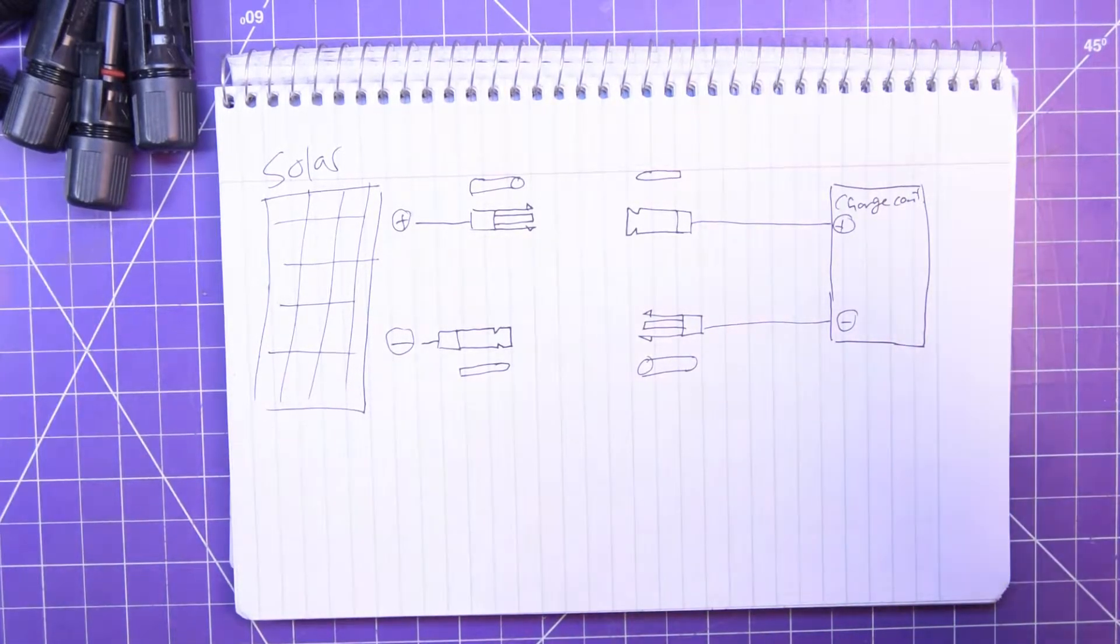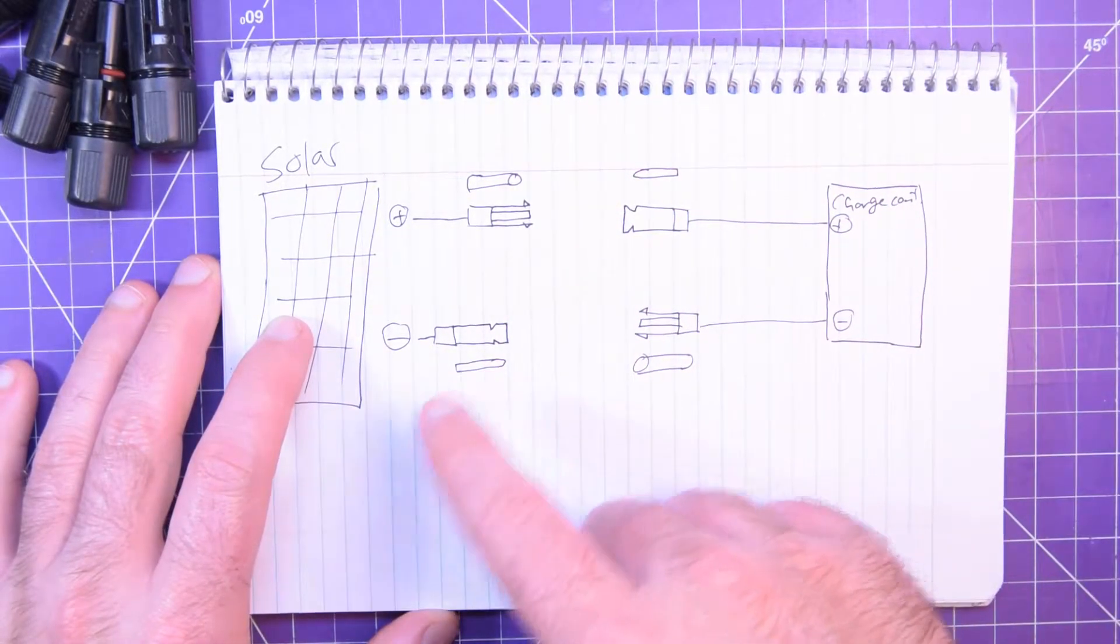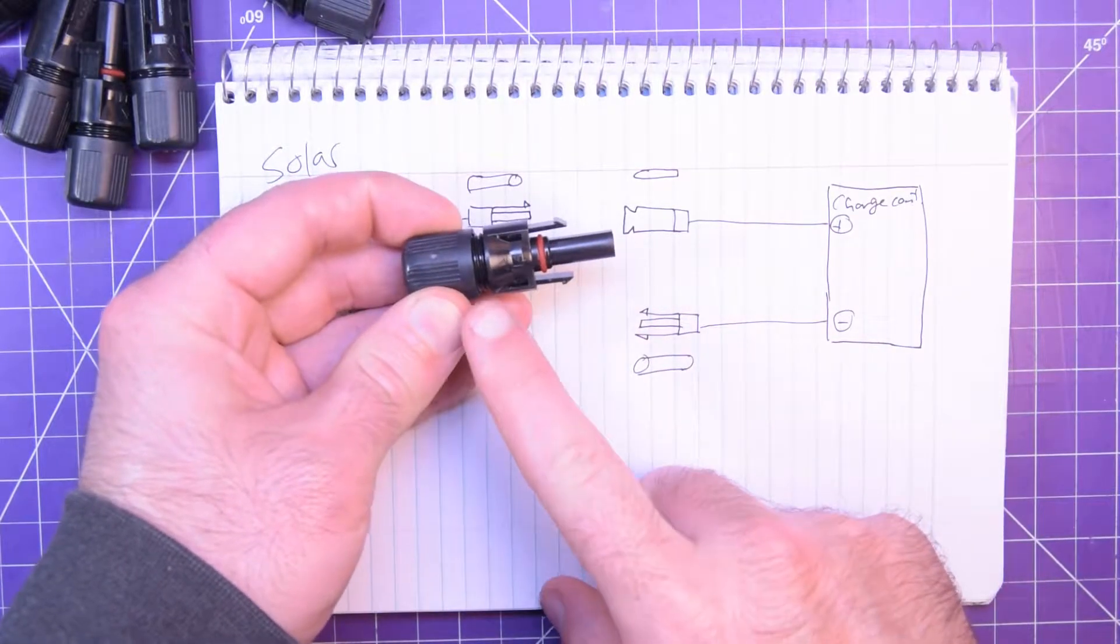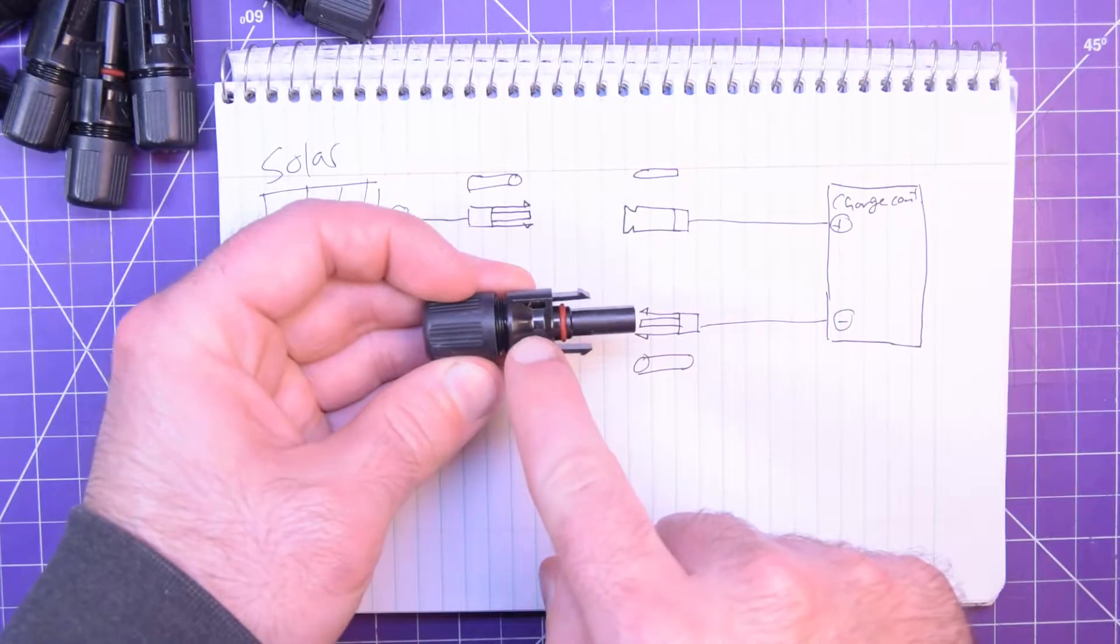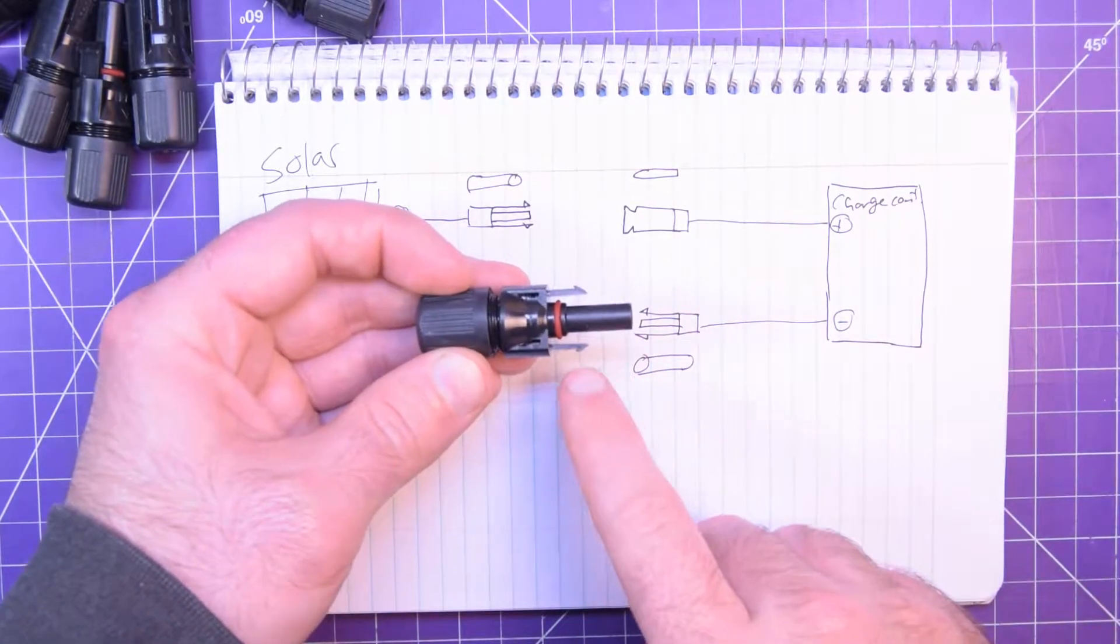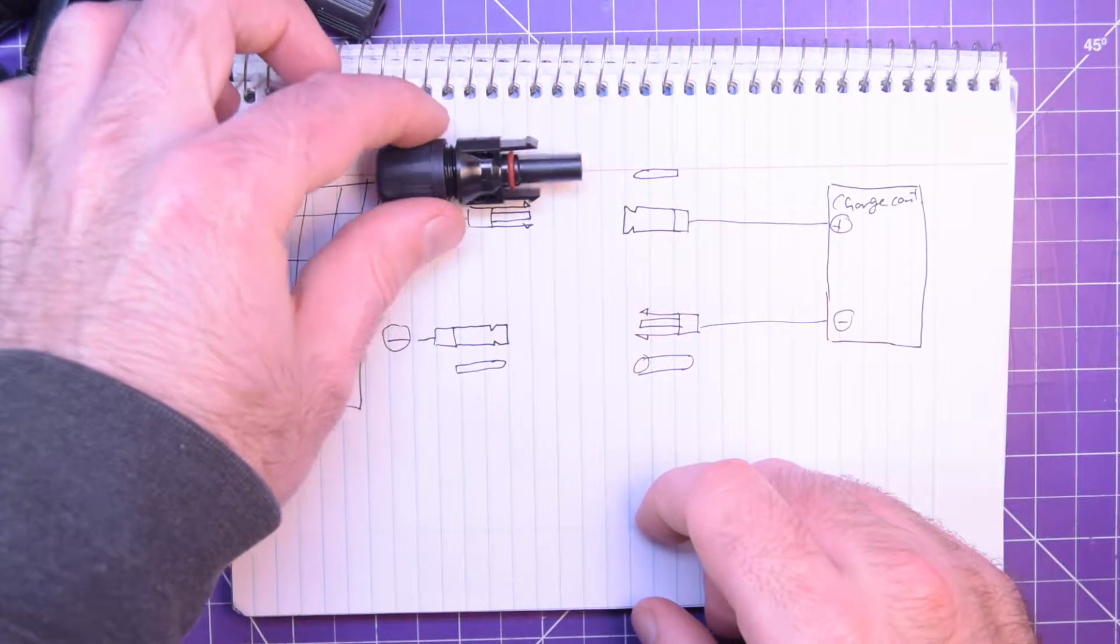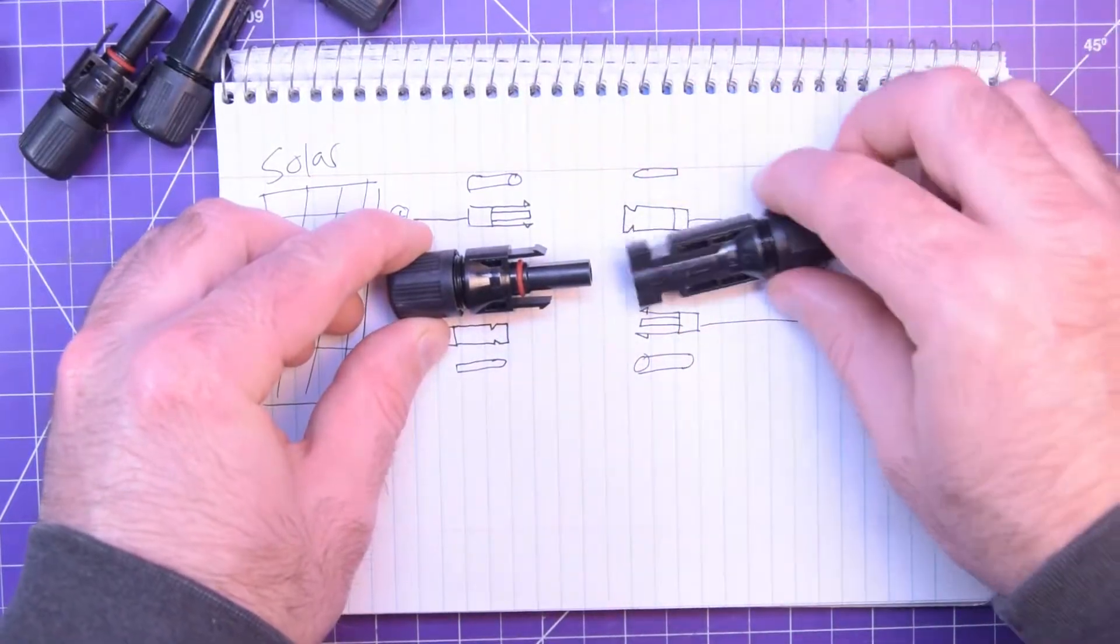These connectors are also polarized, but not in the way that you think. So for example, you can't say that this one here is a positive or a negative connector. I mean, it is marked positive over here. However, that's only positive for the solar panel side, because for your charge controller side, you're going to need one of these.